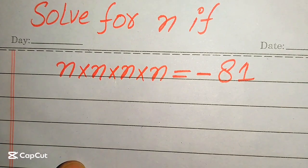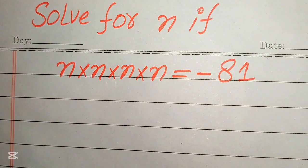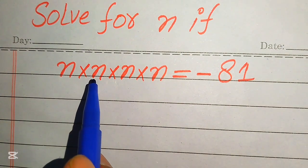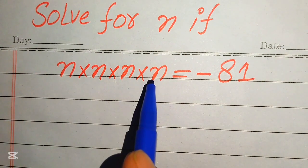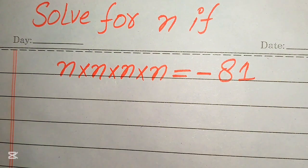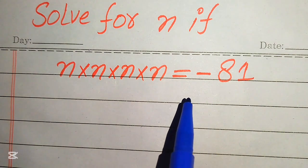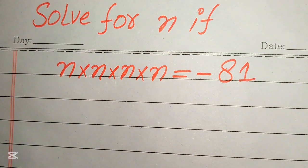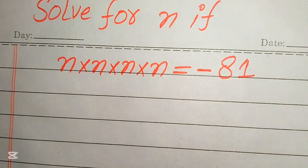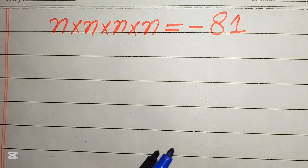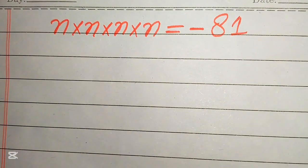Hello everyone. Today I want to show you how to solve this problem for the values of n. If we have n multiplied by n multiplied by n multiplied by n, it equals minus 81, and we solve this problem for the values of n. I hope you like this method, but if you have any good method in mind, please don't hesitate to write it in the comment section.